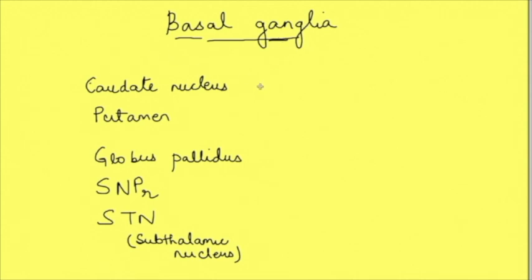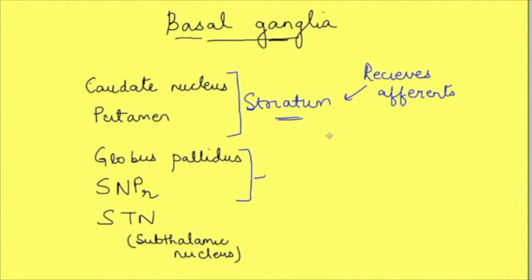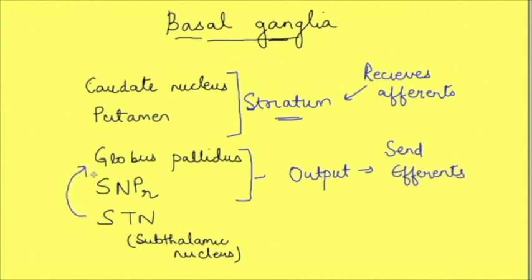Among these, caudate nucleus and putamen together are known as the striatum. This striatum acts as the receiving nuclei of the basal ganglia — that is, striatum receives the afferents coming through the basal ganglia. While globus pallidus and substantia nigra pars reticulata are the output nuclei, meaning they send the efferents from the basal ganglia, and the subthalamic nucleus is connected to the globus pallidus.